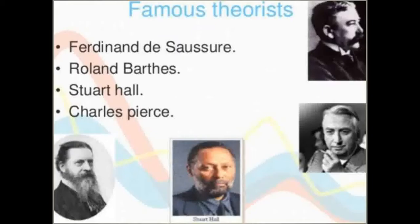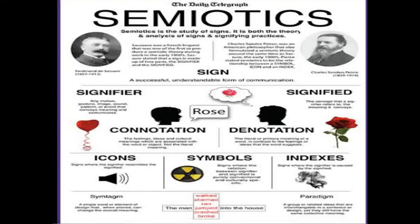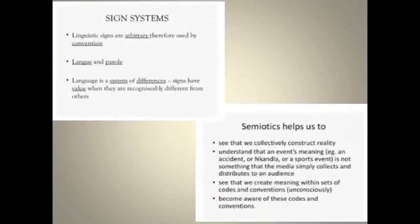Continuing with our study, we saw some of the famous theorists and how language is seen as signs — a system of signs — and how each sign could be understood as signifier and signified, and at various levels how signs could be interpreted in different ways. This sign could be anything from a word to a gesture to just about anything that contributed to successful and understandable communication.